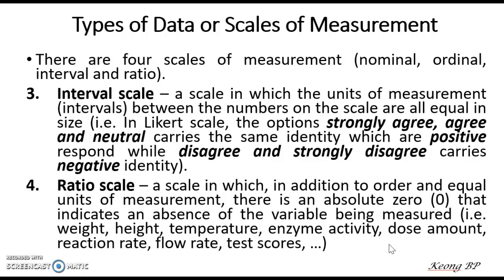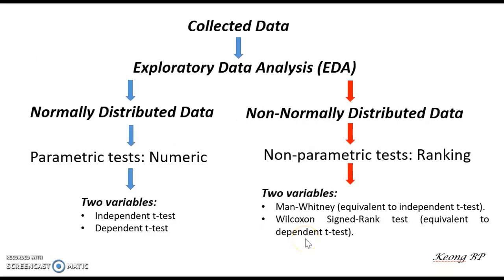Ratio scale data refers to data that produces numbers and has an absolute zero, where zero indicates an absence of the variable being measured. Examples of ratio scale data include weight, height, temperature, enzyme activity, and dose amount. In any social science or pure science research, if we are comparing two different groups or variables, the commonly used test is the t-test. There are two different types of t-test: the independent t-test and the dependent t-test.